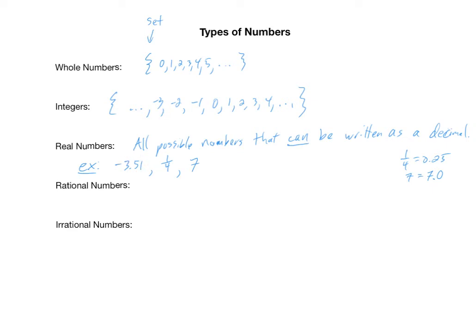Integers and whole numbers are technically real numbers too, since they can be written as decimals by adding .0. But the real numbers include many other types. For example, pi — the ratio of the circumference of a circle to its diameter — can't be written exactly as a decimal, but can be approximated as 3.14. Similarly, the square root of 2 can be approximated as 1.414. So all possible numbers that can be or can approximately be written as a decimal are known as real numbers.